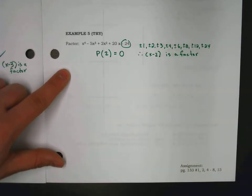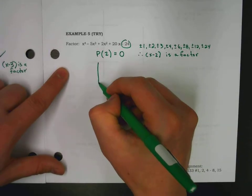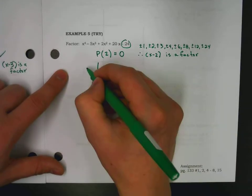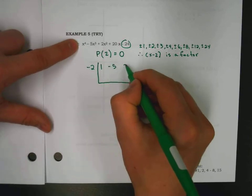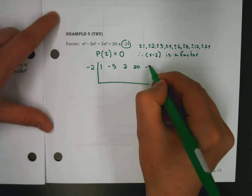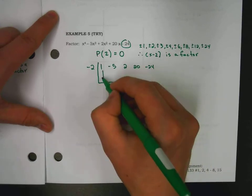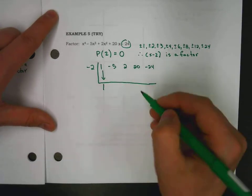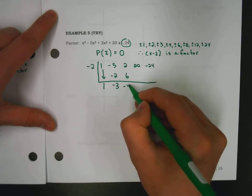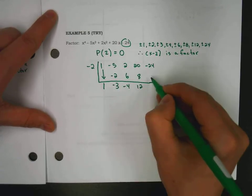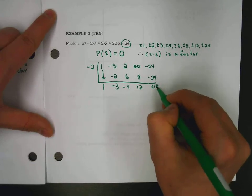So, after we get one of the factors, we would then go into synthetic division and say, all right, x minus 2, we'd write down our coefficients 1, negative 5, 2, 20, negative 24, and we would start our cycle. 1 drops down, multiply, subtract, multiply, subtract, multiply, subtract, multiply, zero remainder.